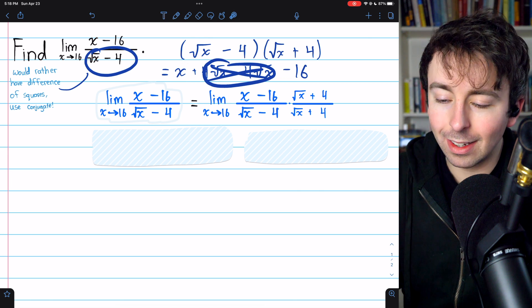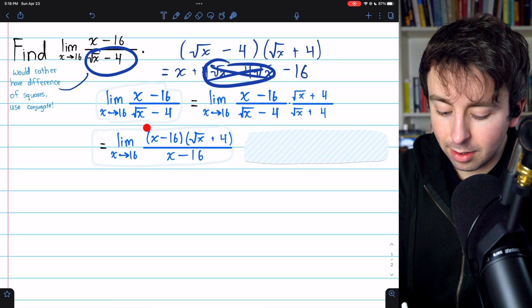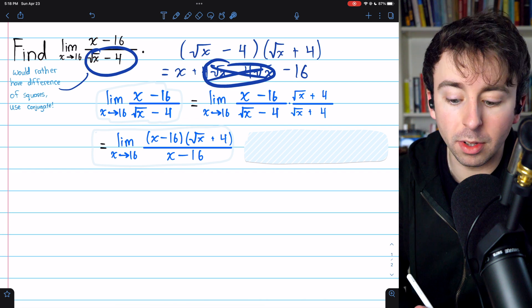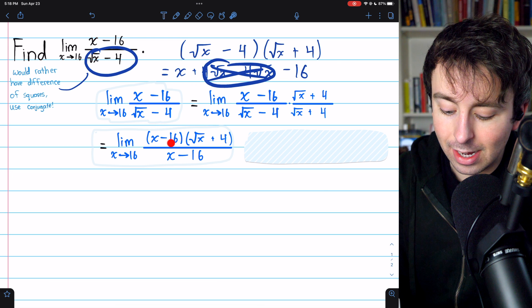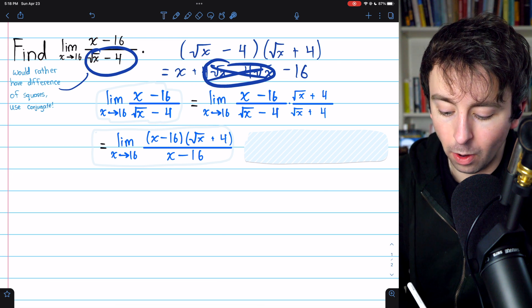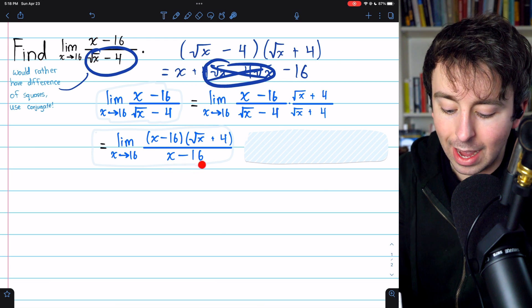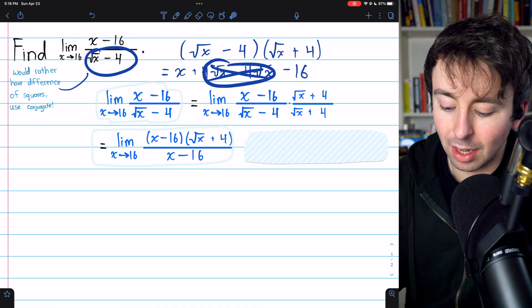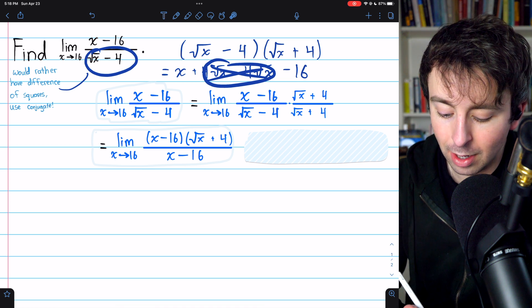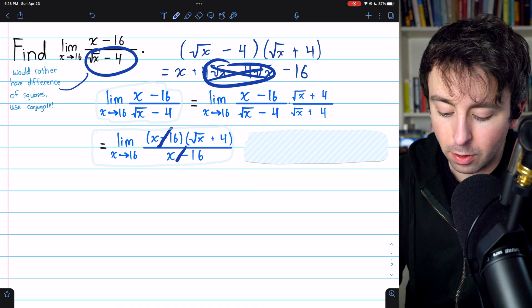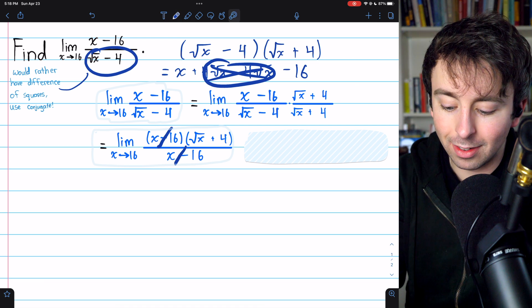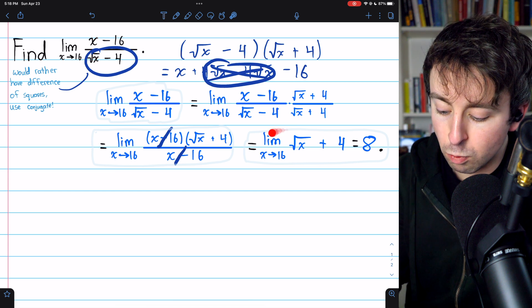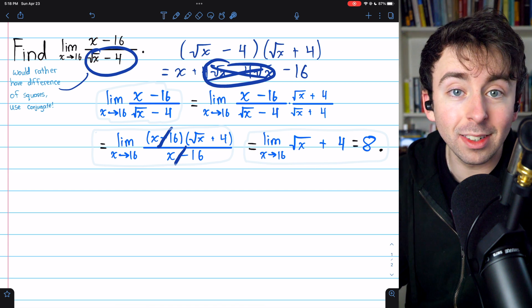And that brings us to this line here. In the numerator, like I said, we don't distribute. We want to keep it in terms of the factors. x minus 16 times root x plus 4. In the denominator, as we just saw, we have x minus 16. That's how the conjugate works. It gives us the difference of the squares. And now we have this cancellation in the numerator. x minus 16 and x minus 16 cancels out. And that just leaves us the limit of root x plus 4 as x approaches 16.